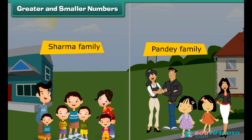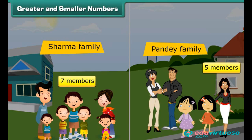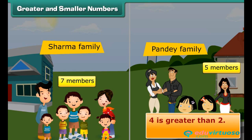Greater and smaller numbers. Recall the Sharma family with seven and Pandey family with five members. Sharma family has more members, which means seven is a greater number than five. Therefore, we can say that numbers that come later are greater than the numbers that come before. Four is greater than two. Fifteen is greater than ten.